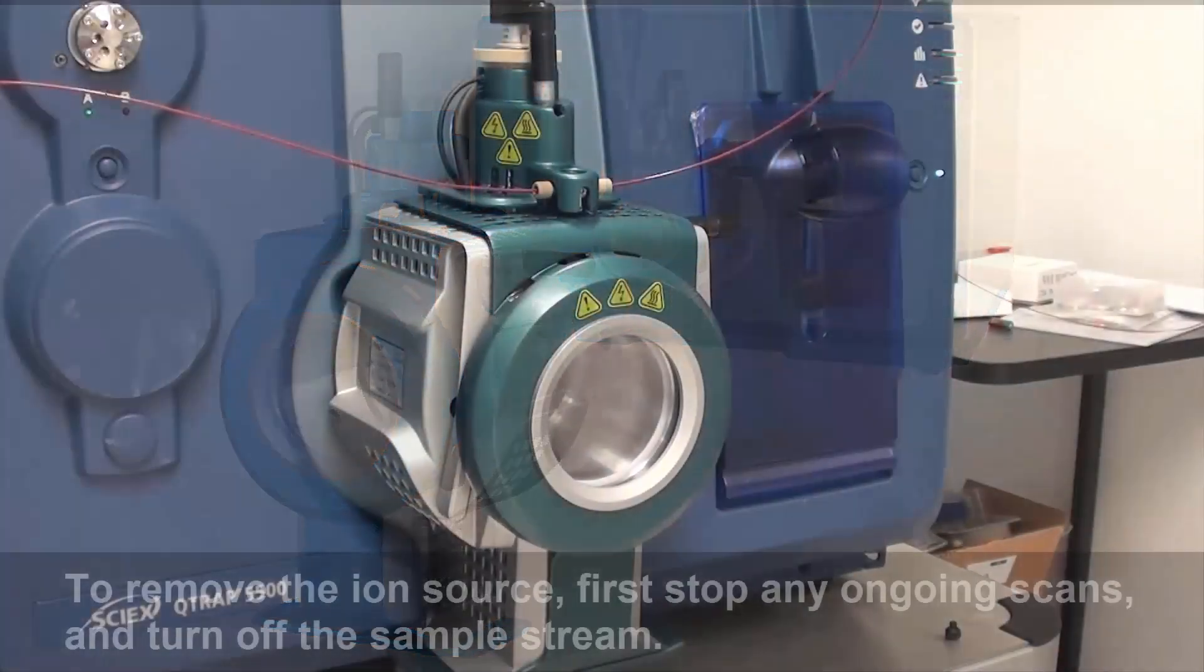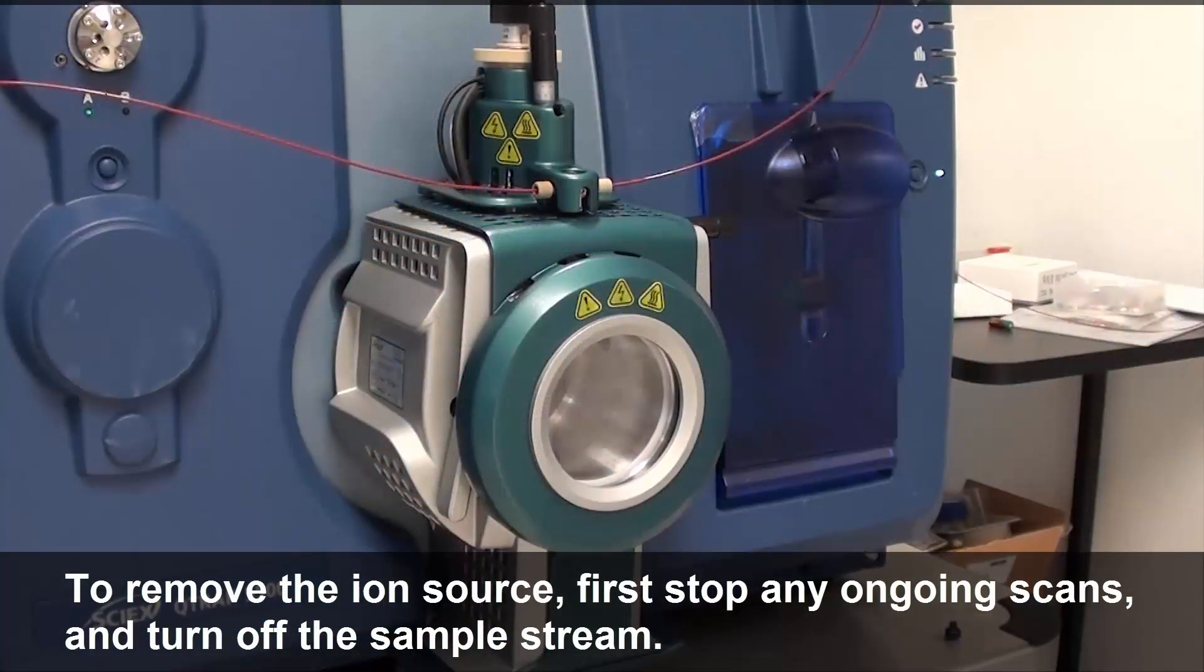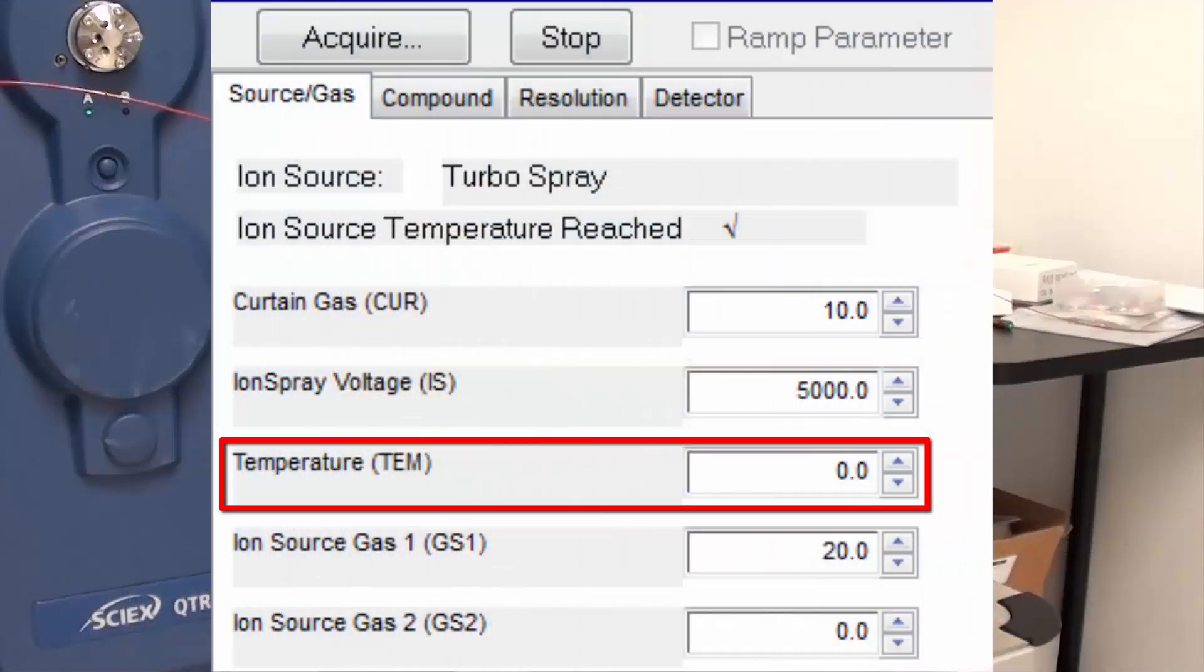To remove the ion source, first stop any ongoing scans and turn off the sample stream. Type 0 in the temperature field if the heaters are in use.